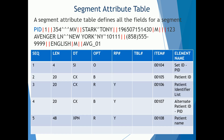The segment attribute table defines all the fields for a segment. If we take a look at the PID segment, which is patient identifier, it tells us and defines what the sequence number is of the field, which means the position of the field. It also lets us know the length. So we have: sequence number, length, data type (the type of the field), optionality (if it can be optional), repeatable (if it can repeat), TBL (if the value comes from a table), the table number, the item number (the unique item number for that field), and the actual element name.